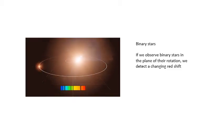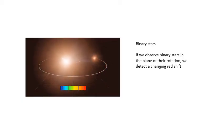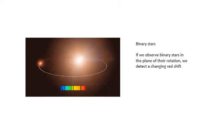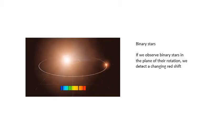This is because one of the stars, in fact both of the stars, at any point in time are either moving towards us or moving away from us. If we observe binary stars in the plane of their rotation, we detect a change in red shift. It mentions this in the specifications, so make sure you can do the calculations on it. There's a few on past papers.